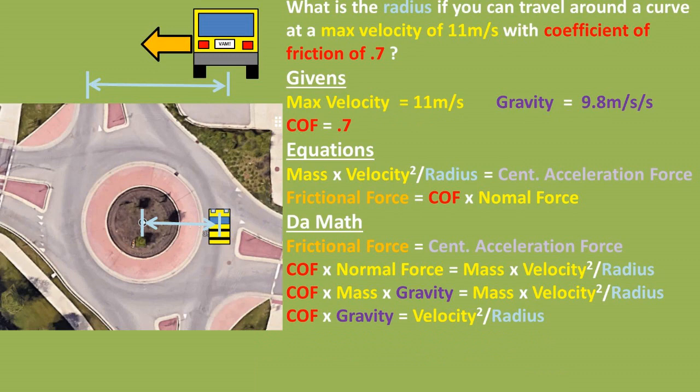To finish off this problem, let's find the radius if you can travel around the curve at a max velocity of 11 meters per second with a coefficient of static friction of 0.7.